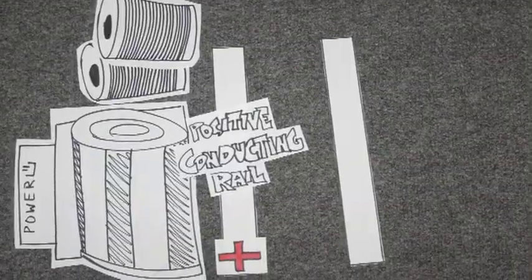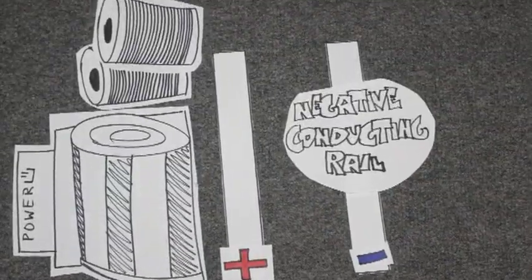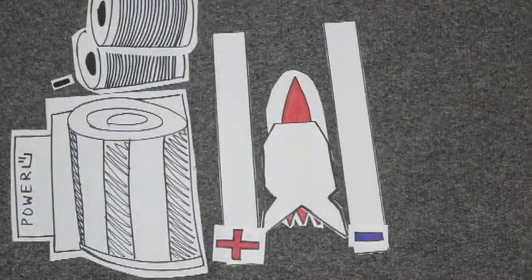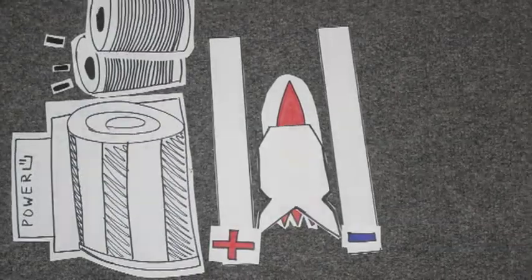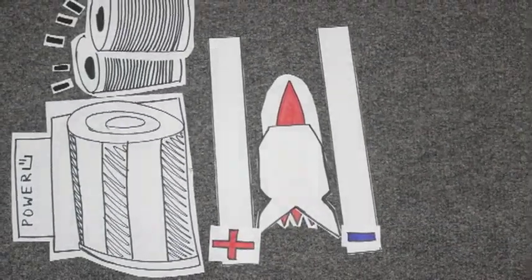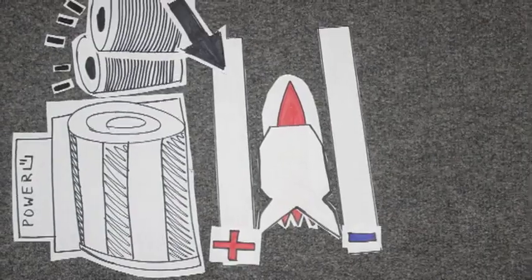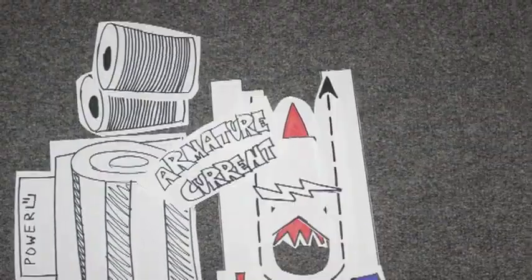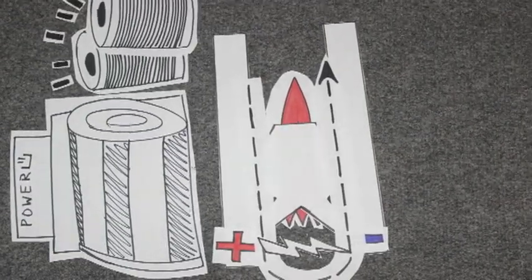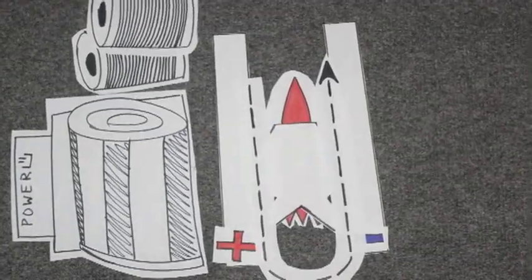One of the rails is positively charged, and the other is negatively charged. Current flows from the power generator to the pulsed power source. This charges the pulsed power source until the current reaches into the millions of amps. Once it is charged, the current flows into the positive rail, through the armature, into the negative rail, and back to the pulsed power supply to complete the circuit.